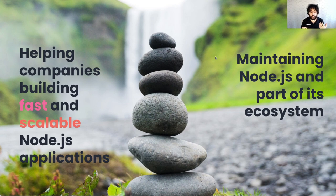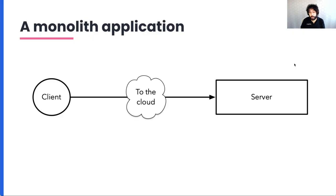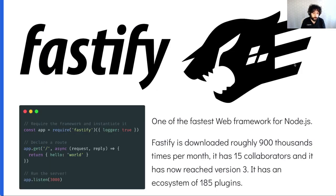As part of this activity, I tend to write and build new things when the opportunity arises. Most applications start as a monolith — there's nothing bad about monoliths. And Fastify, the framework that I've built, is great for building monoliths. It has almost 900,000 downloads per month and 15 collaborators. We are working on version 4 now and we have a lot of ecosystem plugins.